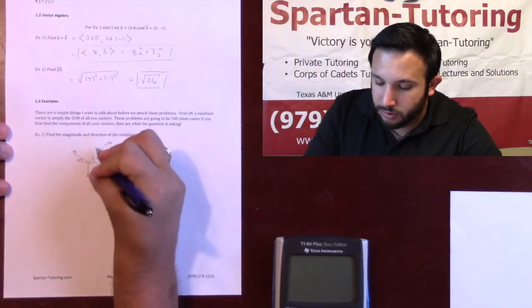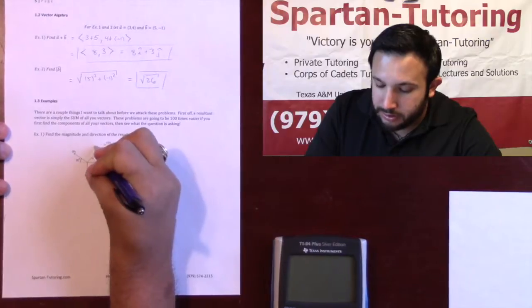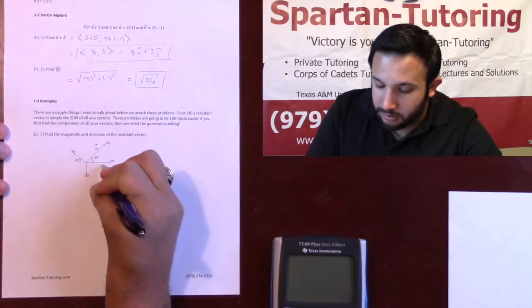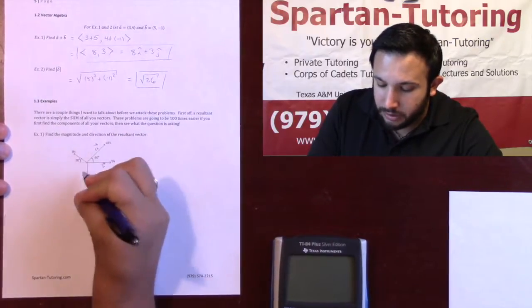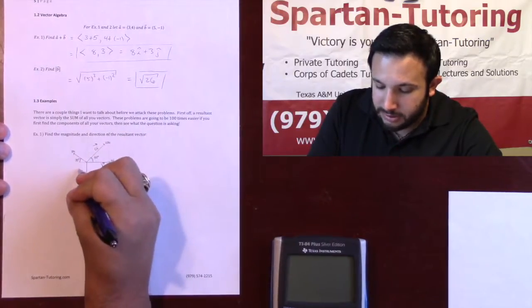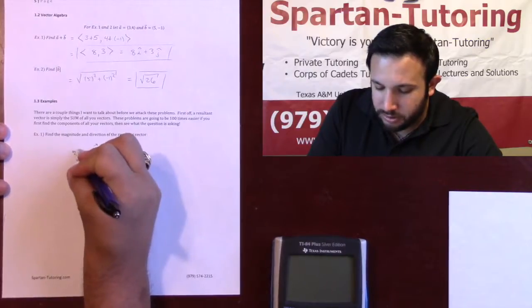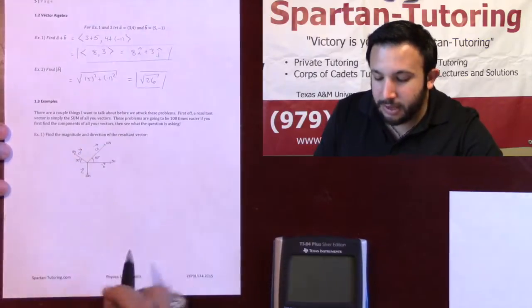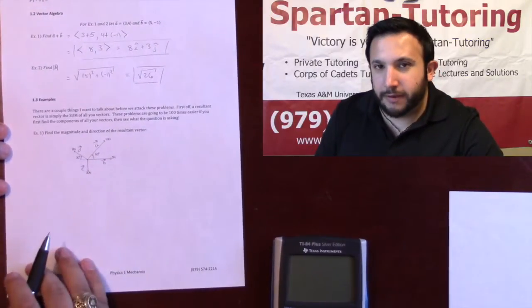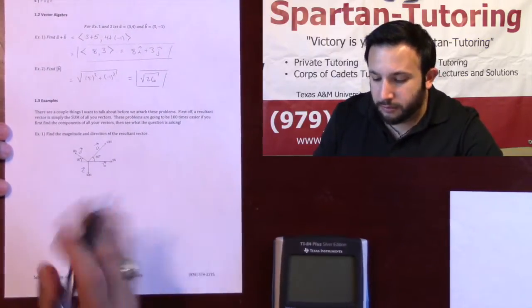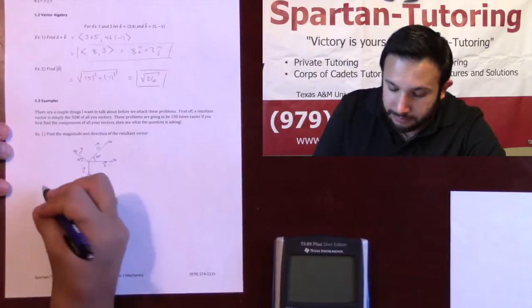So let's call this 10 Newton one — we'll call this A, I'll call this vector B, I'll call this vector C, and let's call this one vector D. And let's go ahead and find the x and y components for each vector.